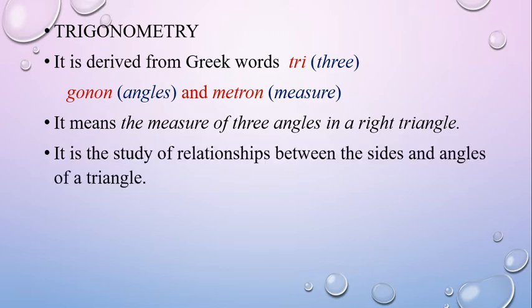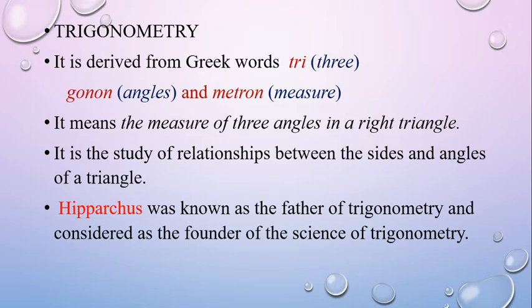It means the measure of three angles in a right triangle. It is the study of the relationship between the sides and angles of a triangle. Hipparchus was known as the father of trigonometry and considered as the founder of the science of trigonometry.